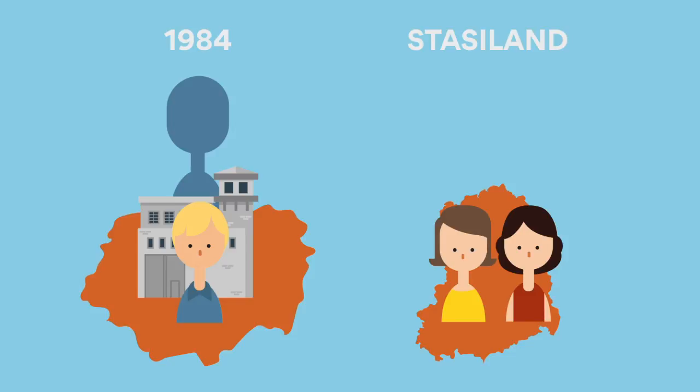She explores their lingering memories of the regime after the reunification of Germany in 1989, and looks at the discrepancies between personal experience and official documentation of the era. The title, Stasieland, comes from the name for the secret police who spied on the citizens inside the GDR. They are known as the Stasi.